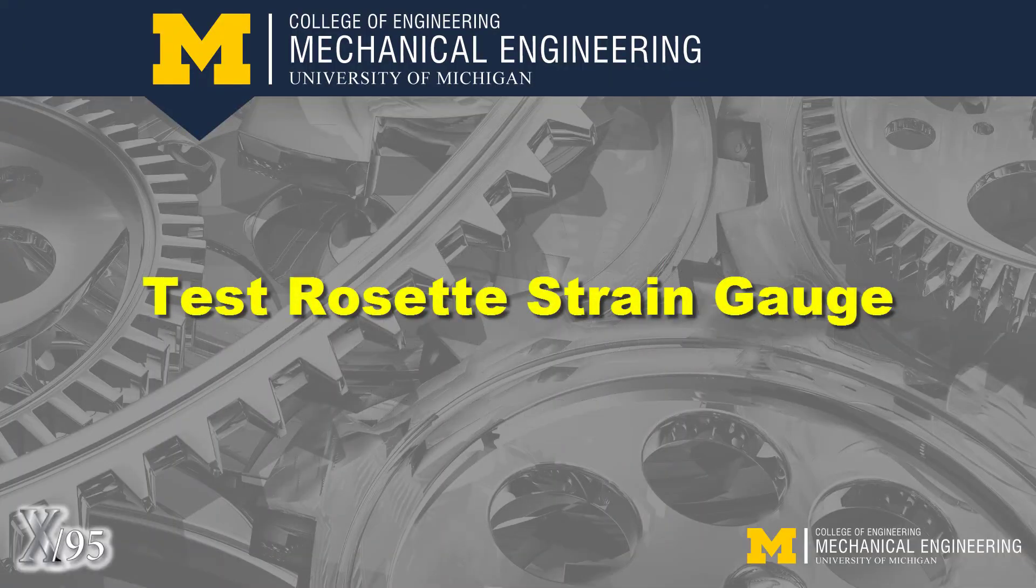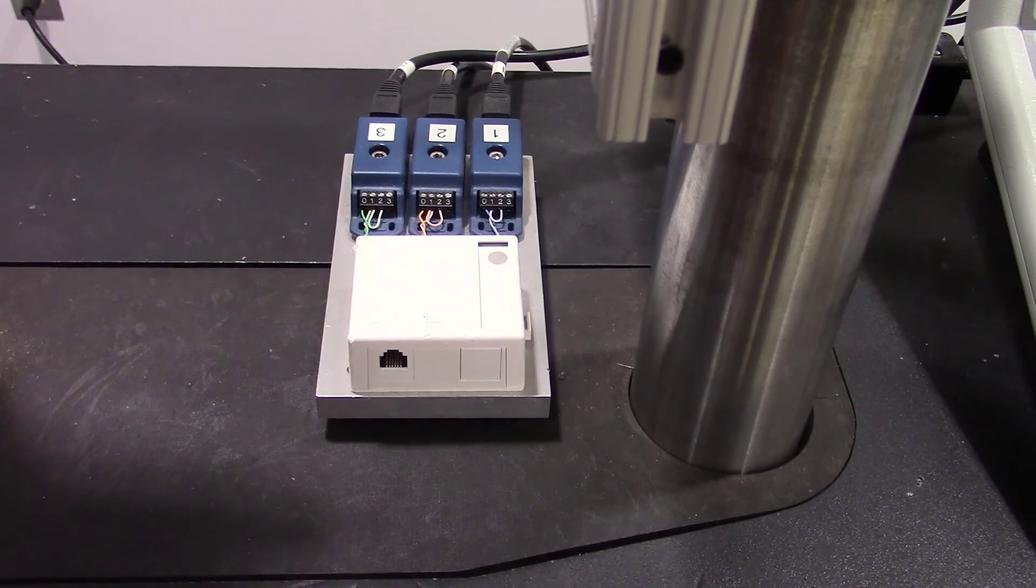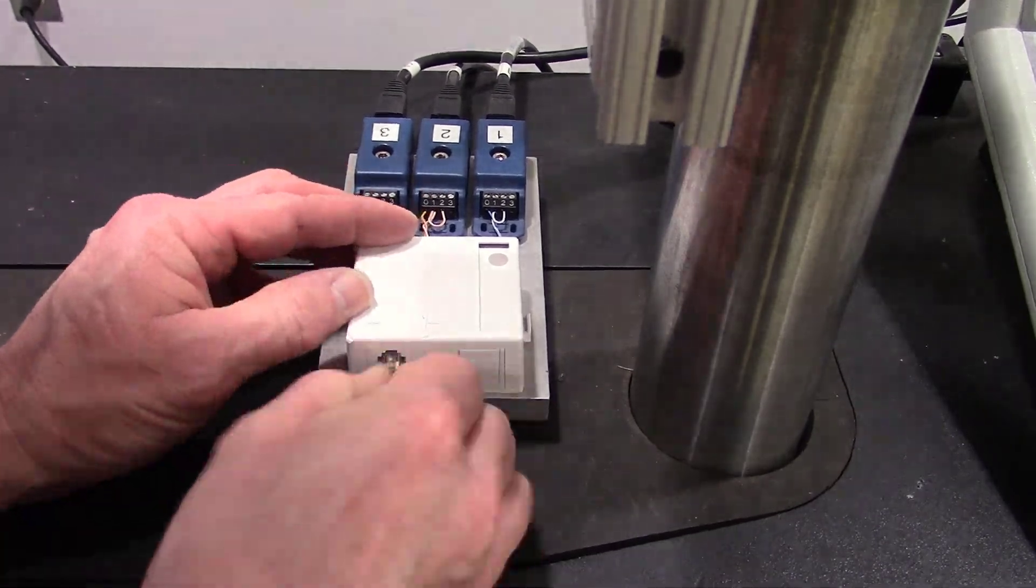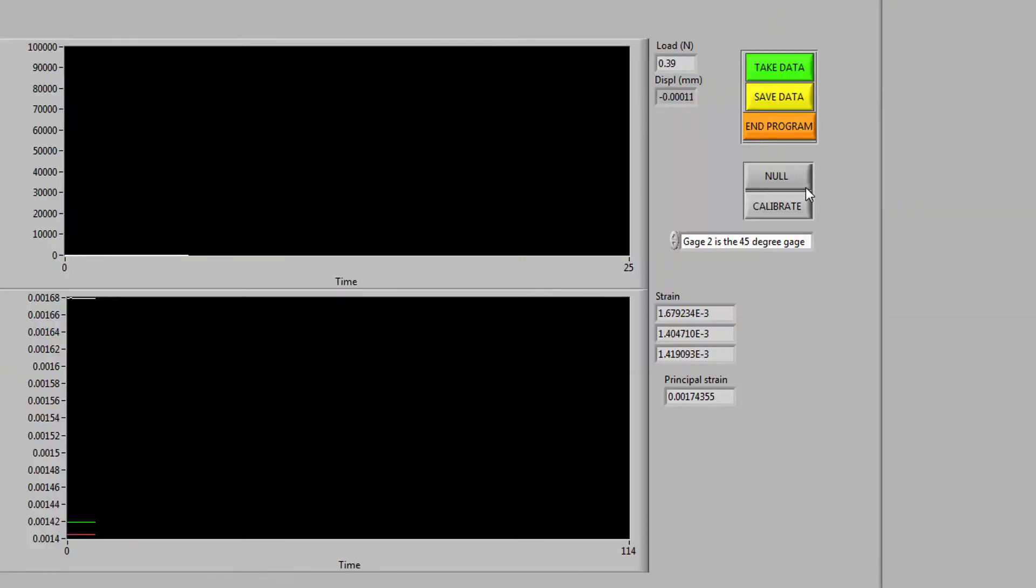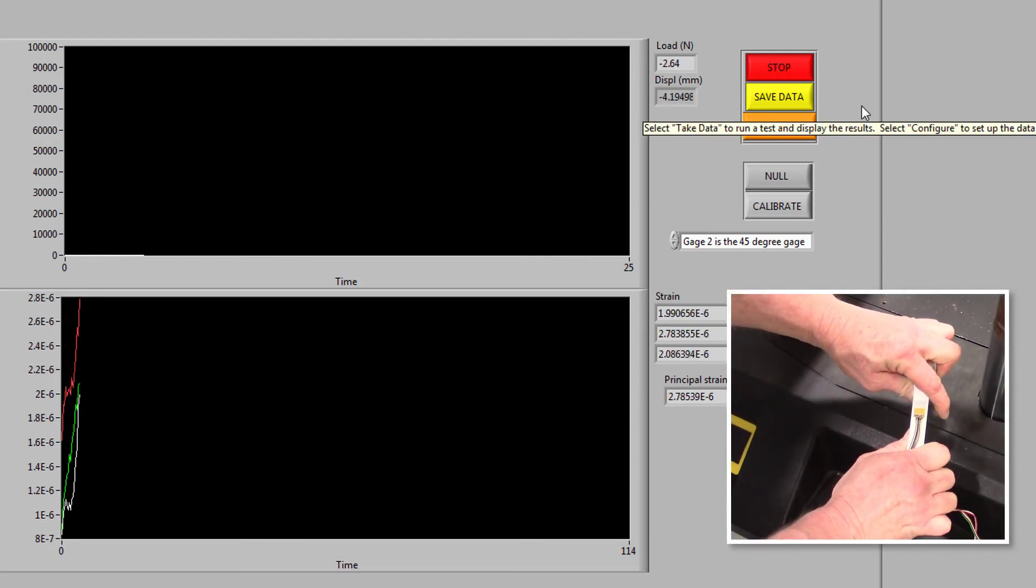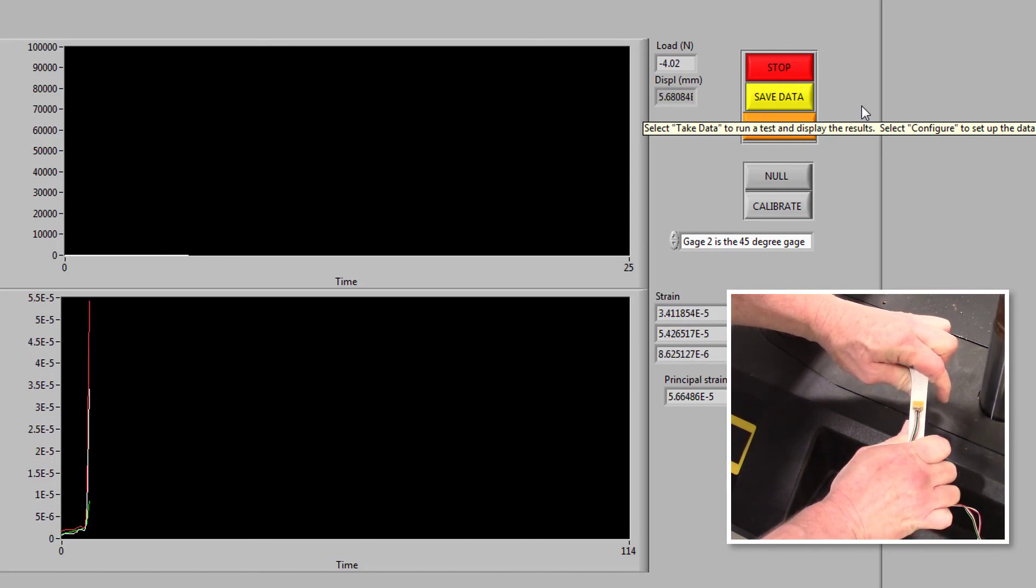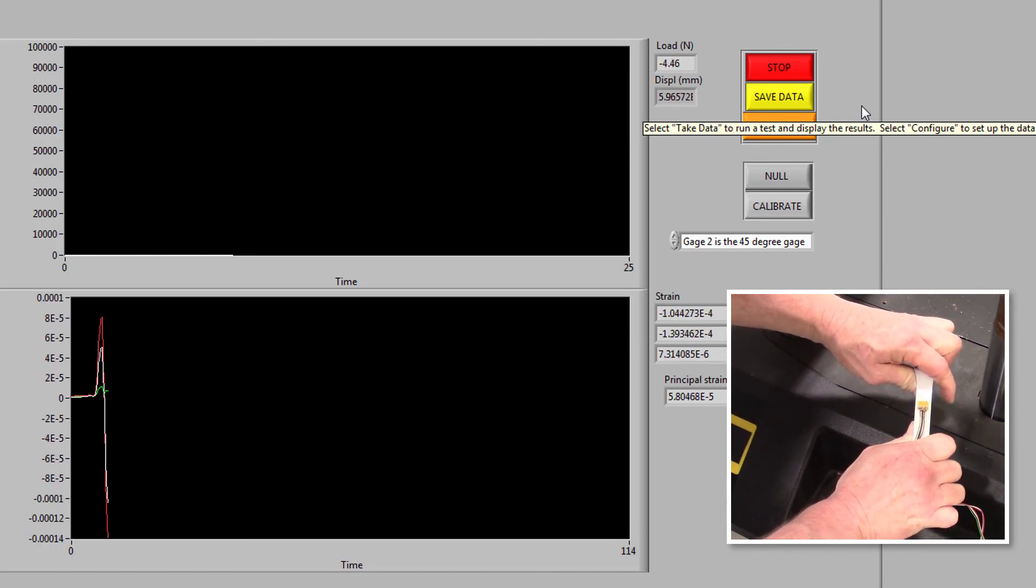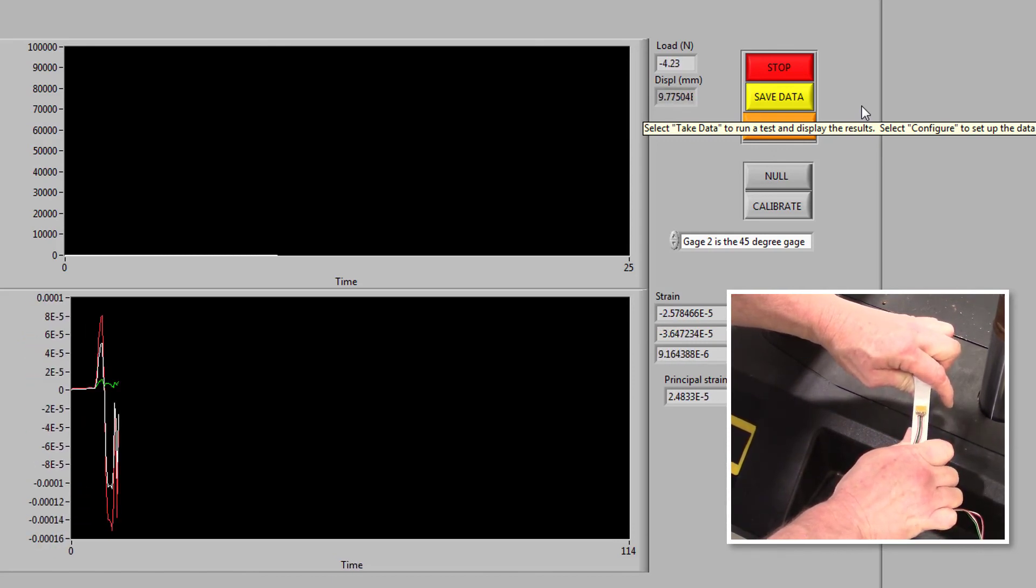Before proceeding, let's verify all three strain gauge channels are operational. Plug the rosette connector into the white box. In LabVIEW, null and then calibrate the rosette strain gauge. Click the Take Data button and manually stress the dog bone specimen. All three channels should be responsive to the stress. If not, get another dog bone specimen.